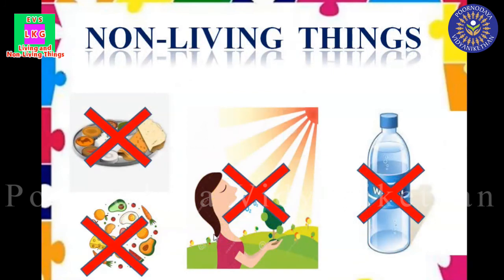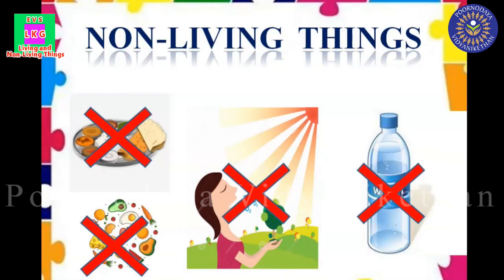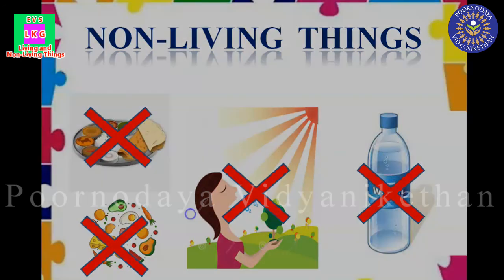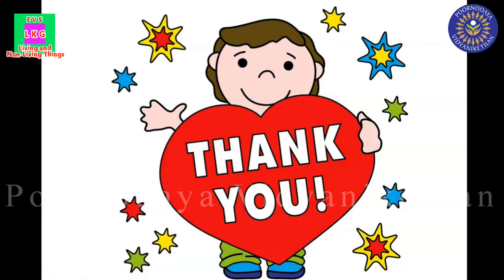So now you know the difference between living and non-living things. Living things need food, water and air to live. Now in your textbook you have worksheets to identify living and non-living things. Do the worksheets and take a photo and send it to our WhatsApp group. Thank you. See you in the next class.